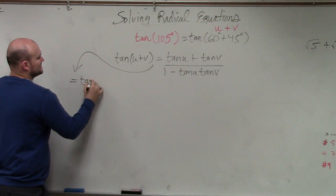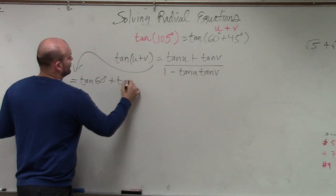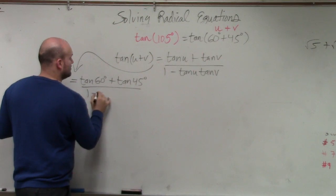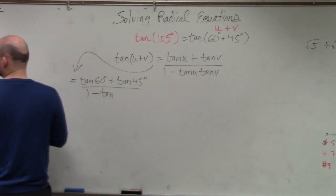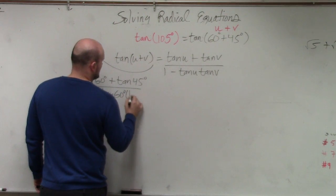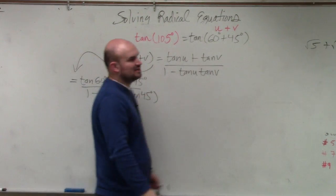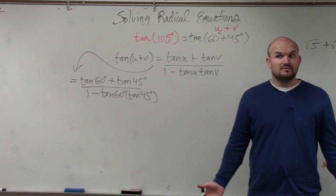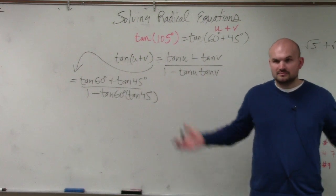So it's going to be tangent of 60 degrees plus tangent of 45 degrees all over 1 minus tangent of 60 degrees times the tangent of 45 degrees. Does everybody see how I just plugged in 60 degrees in for u and 45 degrees in for v? Does everybody see that? That's it. That's all I did. Yes?